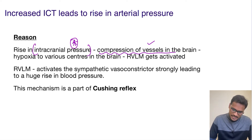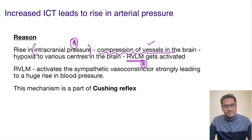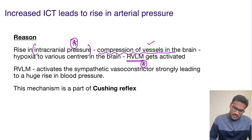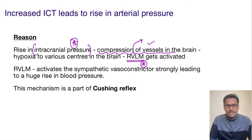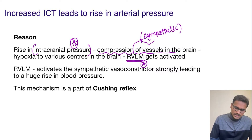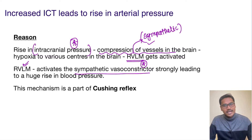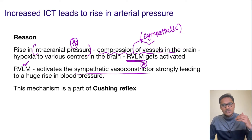Among these centers there is one center which is very very responsive to this hypoxia. This is called the RVLM, which is the rostral ventrolateral medulla — a center we study in BP regulation, where it activates the sympathetic system. So what happens now: the RVLM gets activated, and this activation causes severe sympathetic vasoconstriction, and whenever there is severe sympathetic vasoconstriction the BP is going to shoot up.